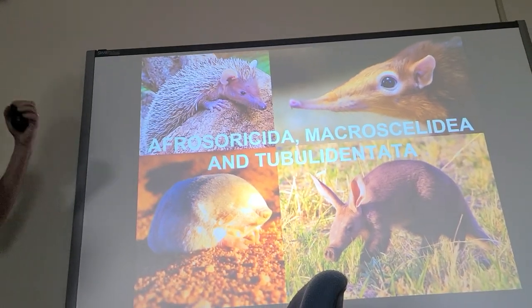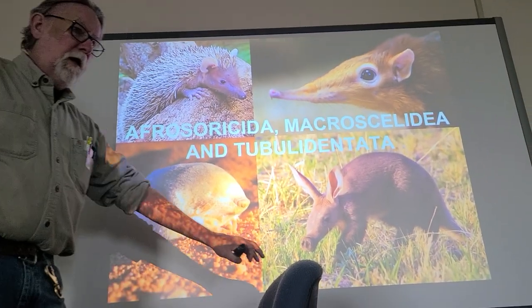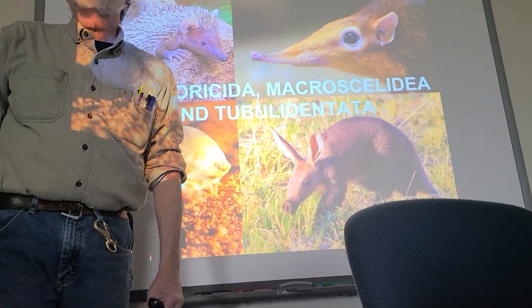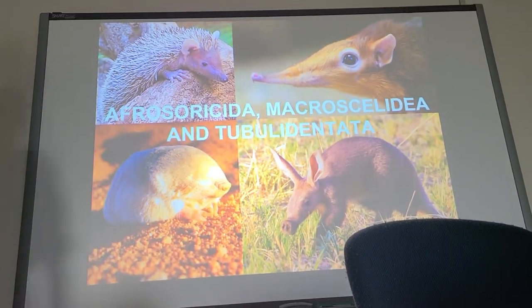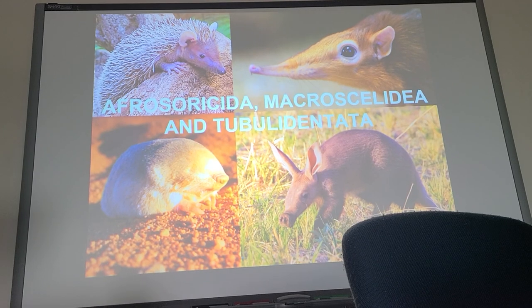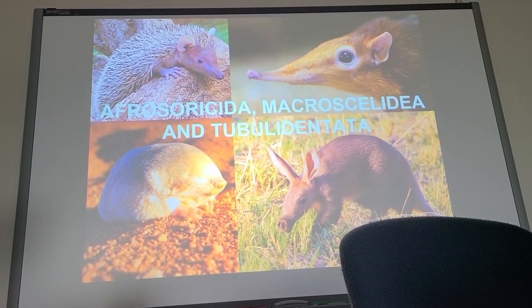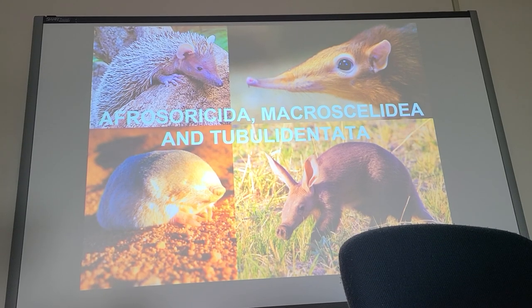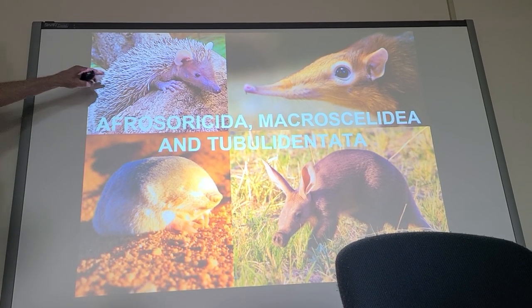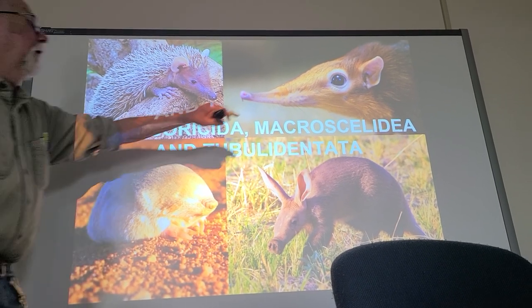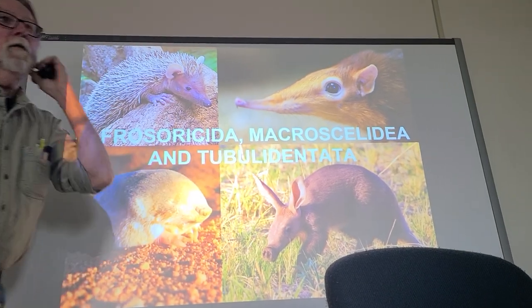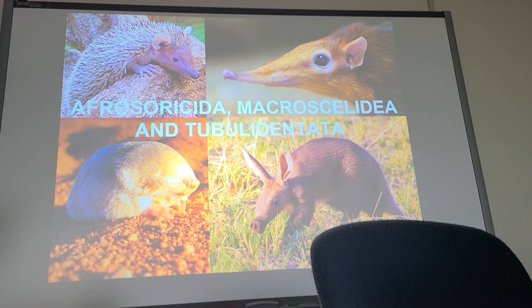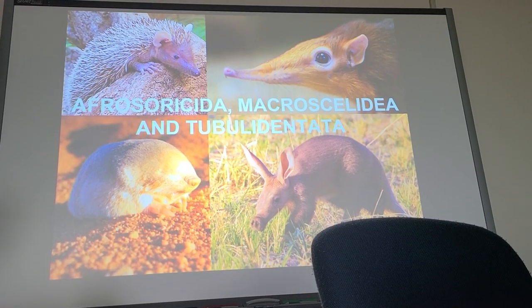For the last part of the semester, we're going to be showcasing some of the different mammal orders. I'll begin with three of the more primitive orders: Afrosoricida, Macroscelididae, and Tubulidentata. I'll be talking about two different members of one order, then one each of the other two.